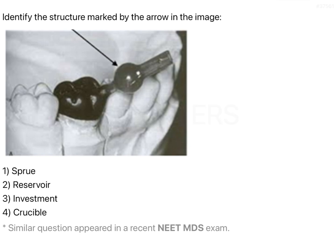The parts of the sprue former each have their own significant function. For example, the neck of the sprue former should be attached to the thickest portion at a particular angle so that the neck does not become an area for fast cooling, so the molten alloy flowing through it does not break or disintegrate the investment material, and so it does not create too much pressure preventing the alloy from flowing elsewhere. The neck should be of a particular diameter to help proper outflow of wax and proper inflow of molten alloy without causing damage.